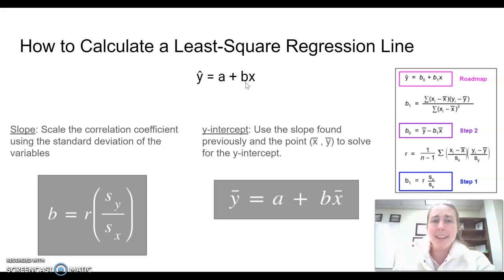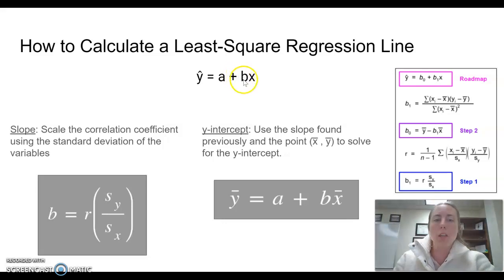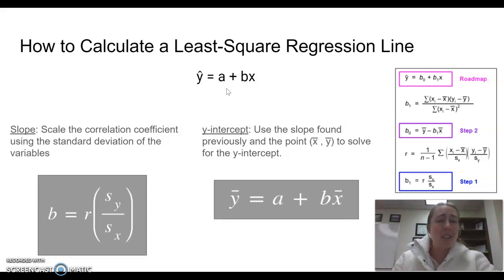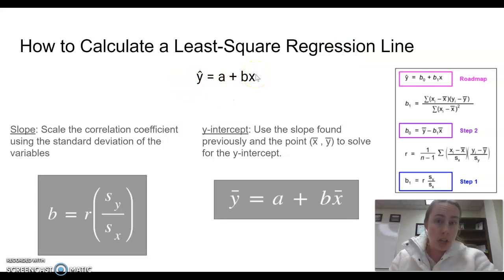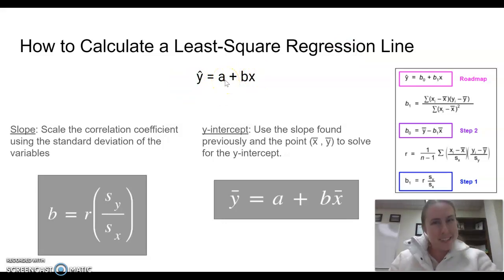That's a little bit confusing because in high school we used y equals mx plus b, where m was the slope and b was the y-intercept. So you have to be really careful what your variables represent. In statistics you're going to see it lots of different ways — they use a and b interchangeably. Sometimes a is the slope, sometimes a is the y-intercept, and b vice versa.